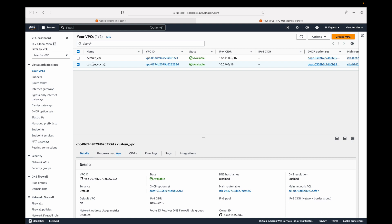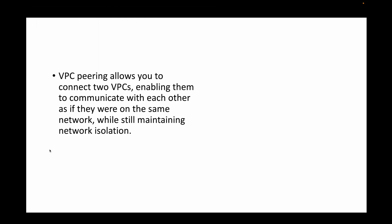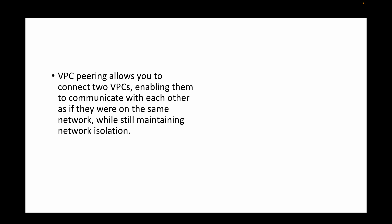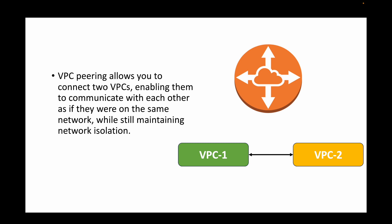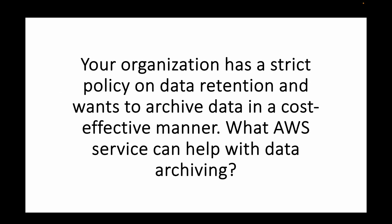So if you want traffic to flow between two VPCs, we make use of peering connections. For example, if you have an EC2 instance in the default VPC and another in a custom VPC, by default there's no communication between them. Peering connections are used to establish communication between two VPCs — say VPC1 and VPC2 — allowing traffic to flow between them as if they were on the same network, while still maintaining network isolation.